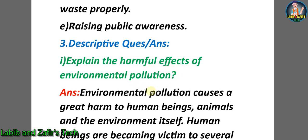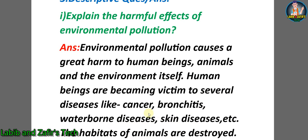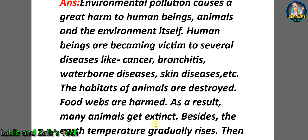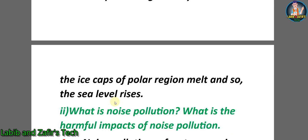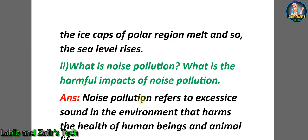Descriptive question number one: explain the harmful effects of environmental pollution. Answer: environmental pollution causes great harm to human beings and animals. Human beings are becoming victims of several diseases like cancer, bronchitis, waterborne diseases, skin diseases, etc. The habitats of animals are destroyed, food webs are harmed, and as a result many animals get extinct. Besides, the Earth's temperature gradually rises, the ice caps of polar regions melt, and sea levels rise.